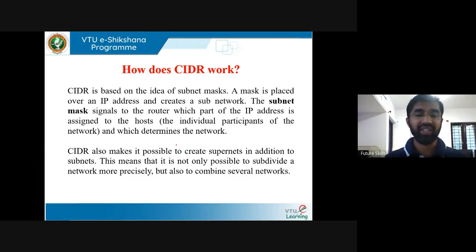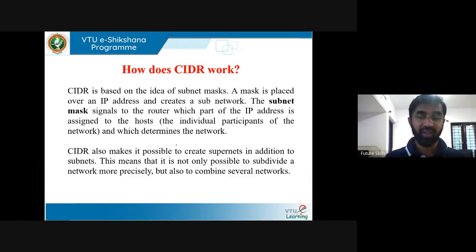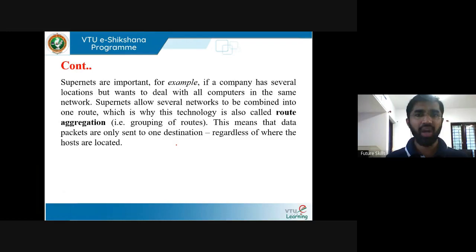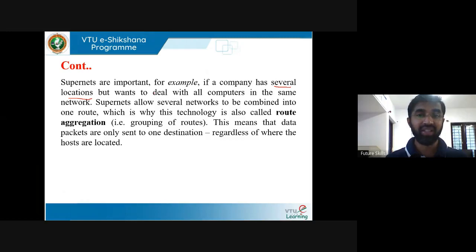If the network is too large, it is difficult for the network administrator to manage, so the network is divided into subnets. Routers exist between subnets and between networks. Supernets are important: if a company has several locations but wants all computers on the same network, supernets allow several networks to combine into one route — this is also called route aggregation, meaning data packets are sent to one destination regardless of where the hosts are located.